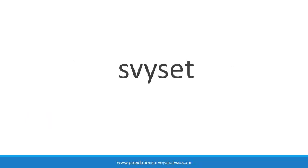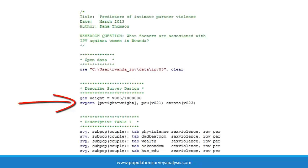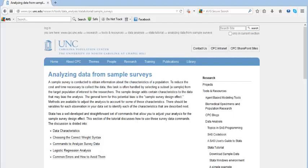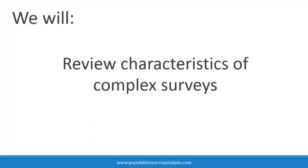This lecture introduces the survey set statement, a single line of code at the start of your Stata data analysis do file which specifies the survey design of your data set. All subsequent analyses, in particular descriptive and bivariate statistics, must account for the survey design to produce unbiased mean and accurate variance estimates. This lecture draws from materials developed by the Carolina Population Center at the University of North Carolina, Chapel Hill. First, let us review design characteristics of complex surveys, and then discuss how to specify the survey design with the survey set statement in Stata.